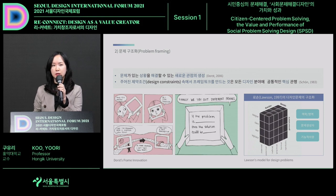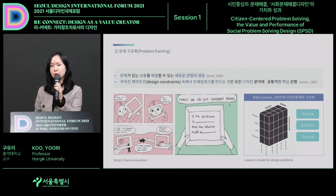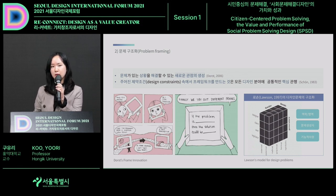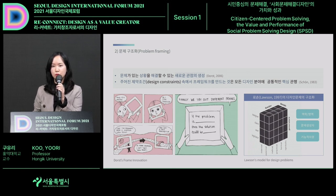Framing comes from design thinking and provides a new perspective when you look at and define a problem. Dose said that framing is a perspective of viewing the issue, so the same issue can be defined in different ways depending on what frames you use. Therefore, different solutions can come out, and you need to create a frame to consider the various constraints. This can be applied when viewing social problems.